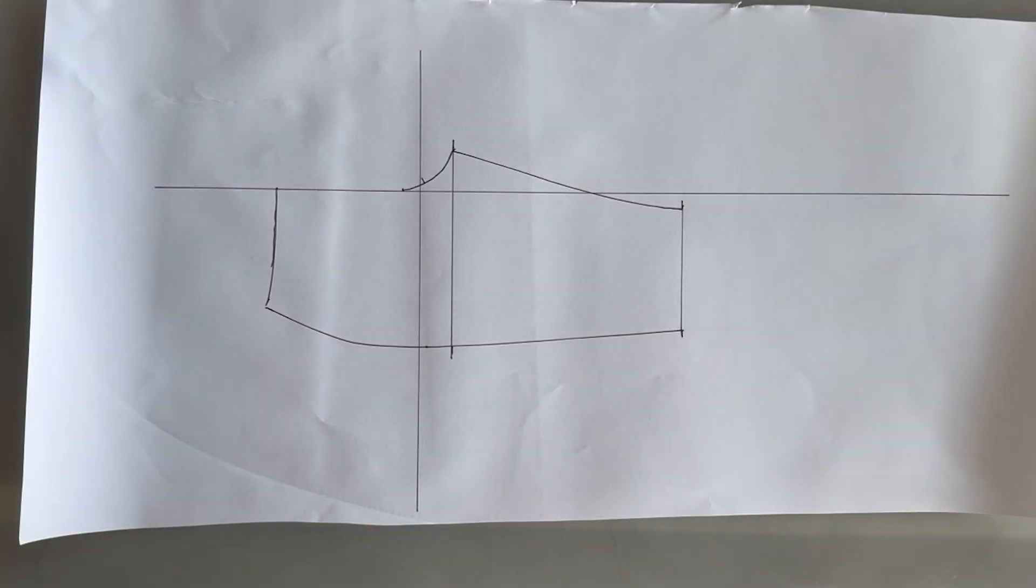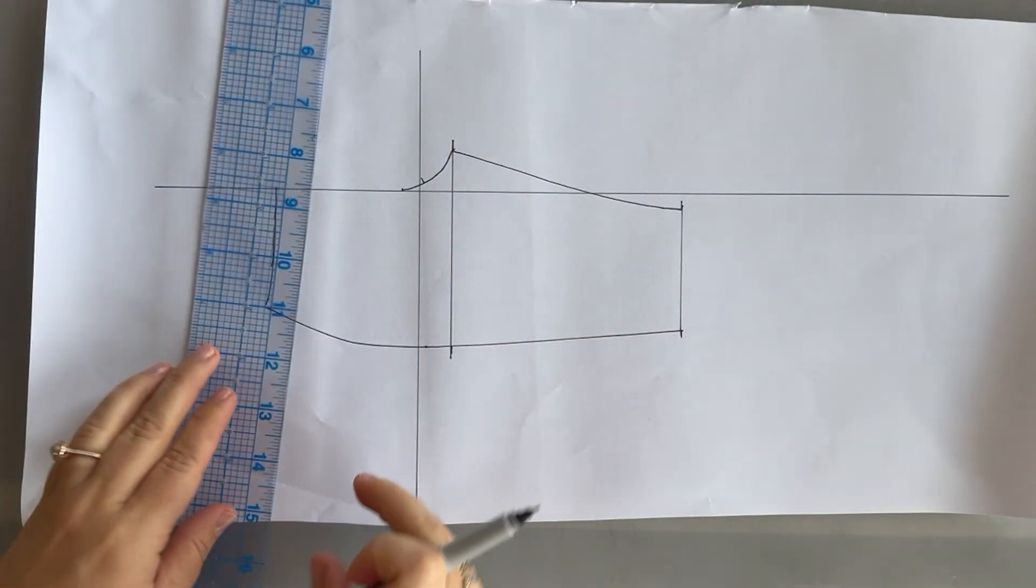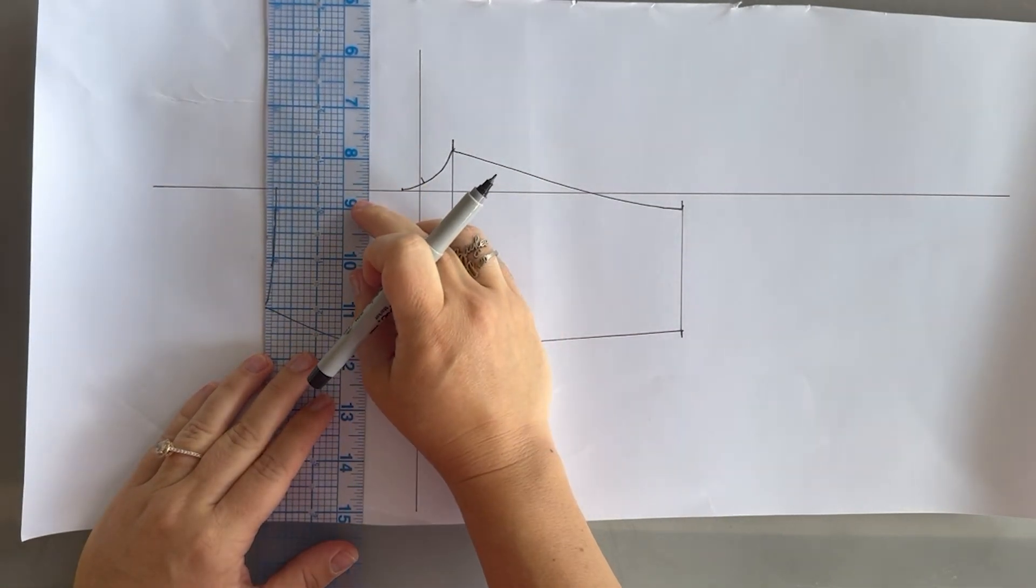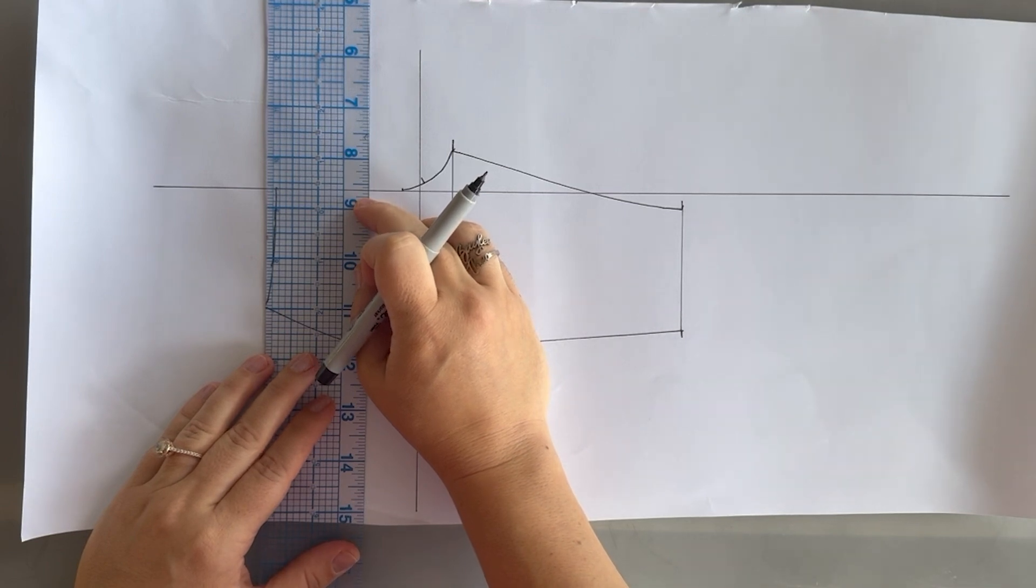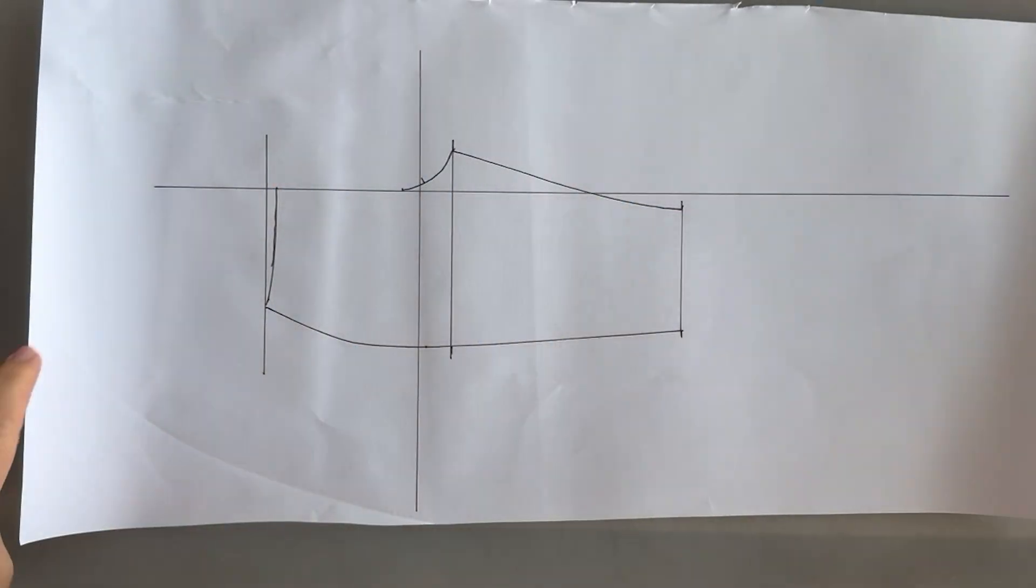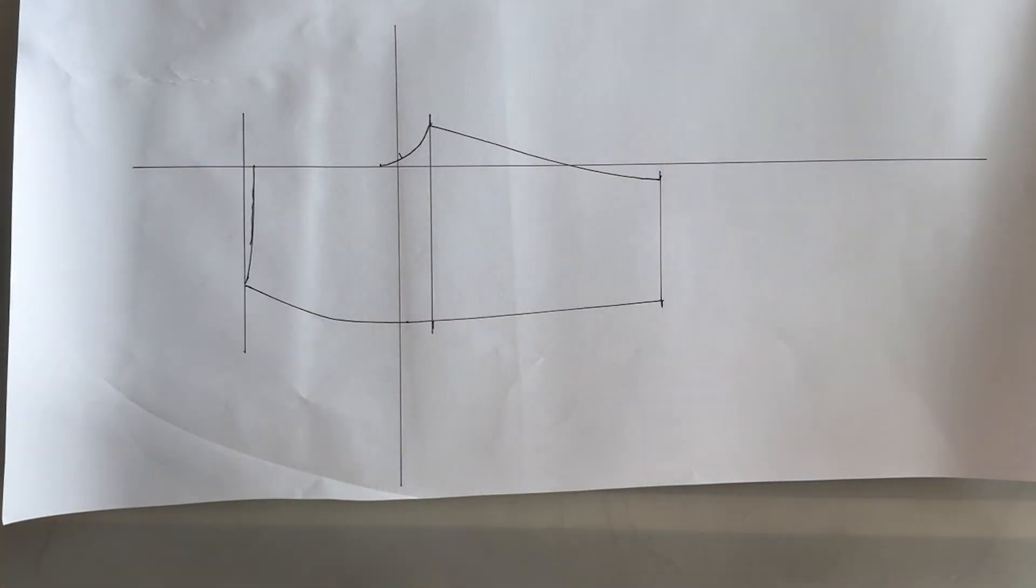The next thing we're going to do is draw a guideline from this corner, the side seam waistline corner. We're going to draw a guideline that's perpendicular to center front. So we want to make sure that we're going straight with center front and then drawing across our full top. What we're doing right now is we're flattening out our waistline because in order to have a casing attached to the top, it's going to be a fold down casing. So we have to have a nice straight waistline to be able to fold on. We can't fold on a curve.